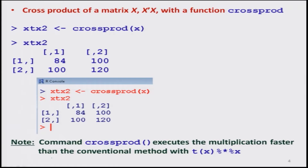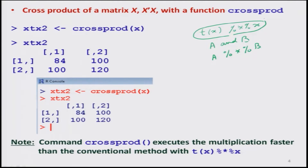There is another thing I would like to show you. Suppose you want to find out the multiplication of the transpose of X with X. We have already shown how to do that. But there is another built-in command in R called crossprod, which computes the cross product — that is, the transpose of X multiplied by X — directly. Instead of writing out the full operation, you can simply write crossprod and inside the bracket write the matrix name.